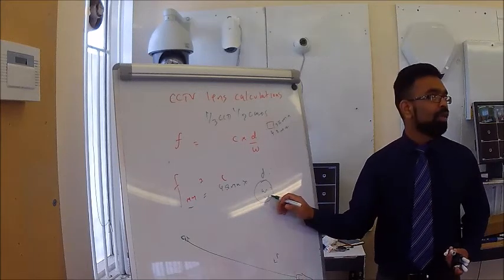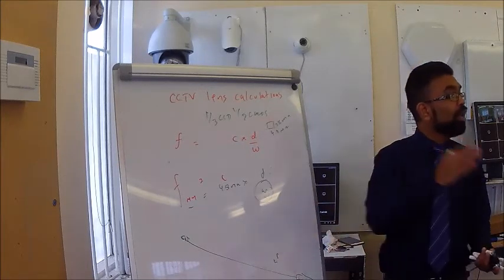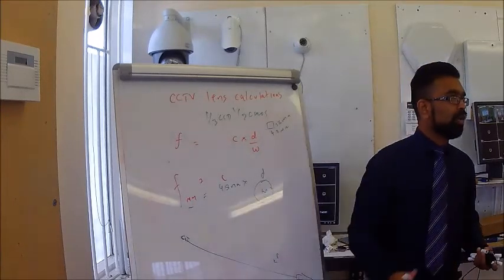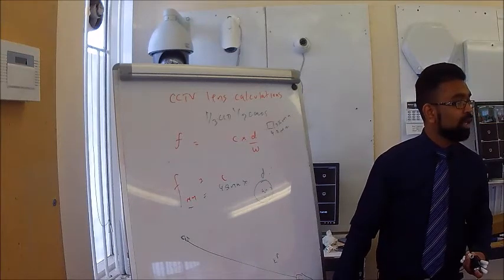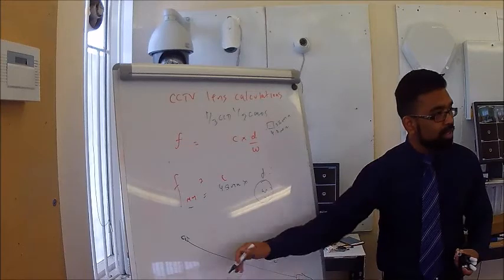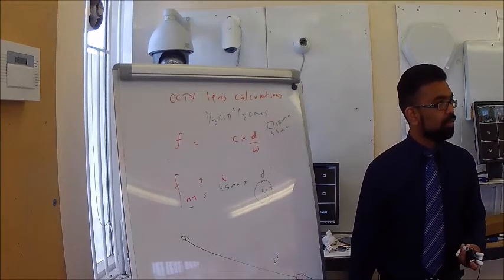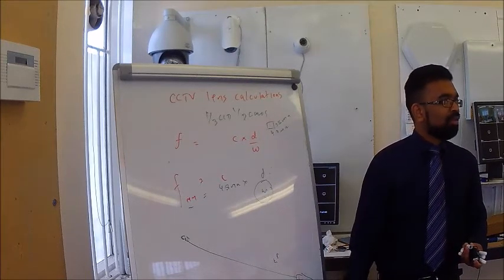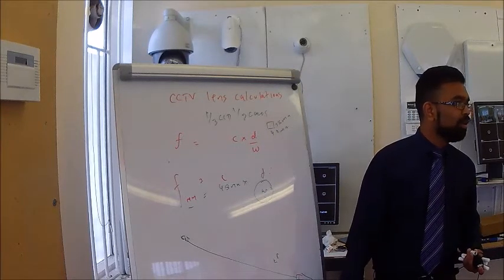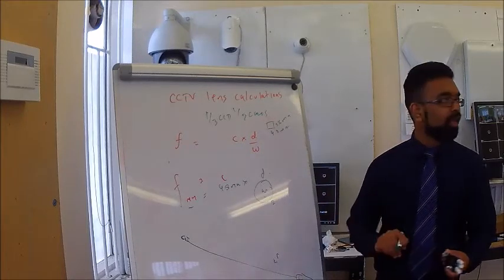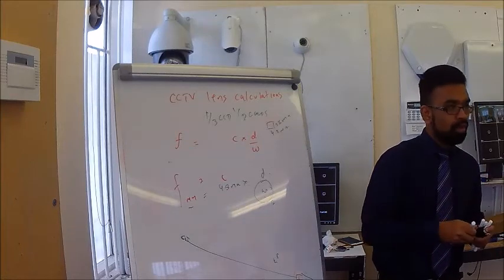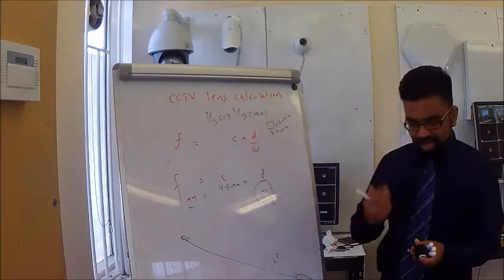So what is W? W or H you could call it. W means it's the width that you are trying to cover. In this application, we are trying to see the number plate of the car. So what would be the width in meters, because we are using the meters as distance? You would be looking at the size of the front of a car. You are looking at 1.5 meter, not more than that. So let's say 2 meter. So 2 meter is what you are looking at.